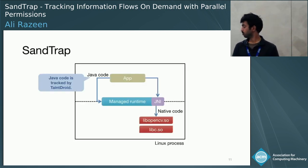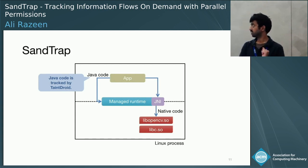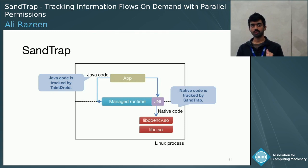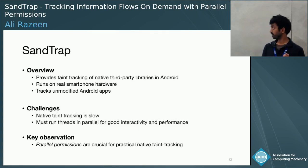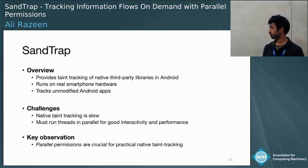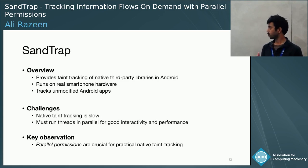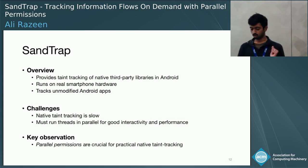And it is precisely this we developed with SandTrap. In our system, we continue relying on TaintDroid to track the Java bytecode portion of the app, and we built an additional piece to track native code whenever the app makes use of the JNI. SandTrap runs on real smartphone hardware with unmodified Android apps downloaded from the Google Play Store. There were a lot of challenges in trying to get this to work. I'm going to describe two of them today, and also discuss parallel permissions, the technique we developed to make all of this practical.